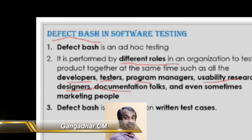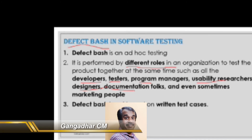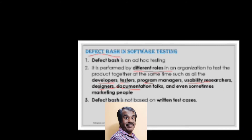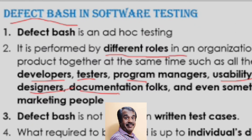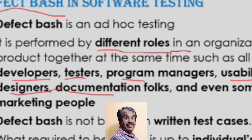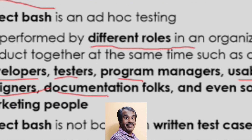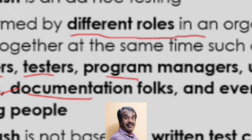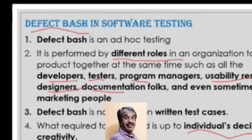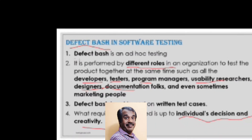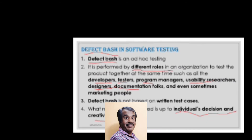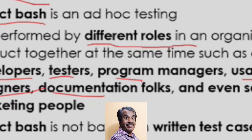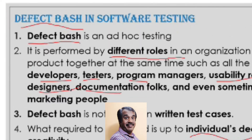In defect bash, no written test cases are given to the participants. They test on their own with no rules applicable — they can test anything based on their individual decision and creativity. The main goal is to find as many defects as possible in-house so issues can be fixed from a business perspective.